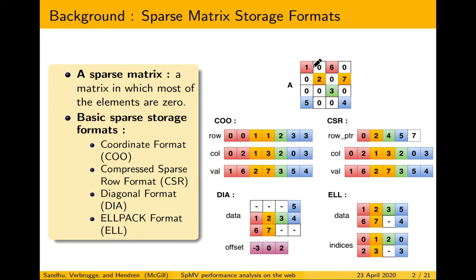In COO, we store each non-zero along with its row and column indices. CSR is a compressed version of COO which compresses the row vector and stores only the starting information of each row. For example, zero indicates that the zeroth row starts from index zero, two indicates that the first row starts from index two, and four indicates that the second row starts from index four.